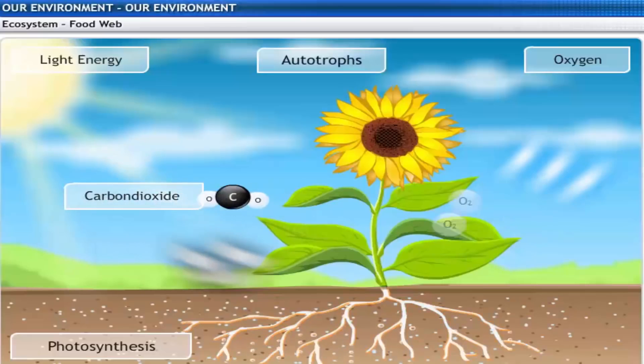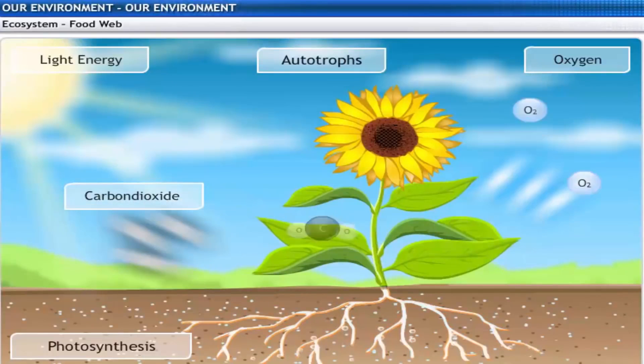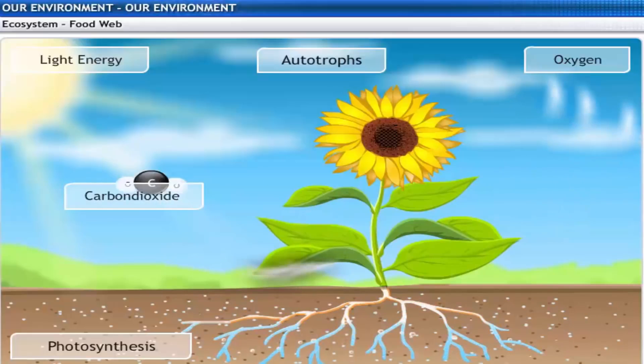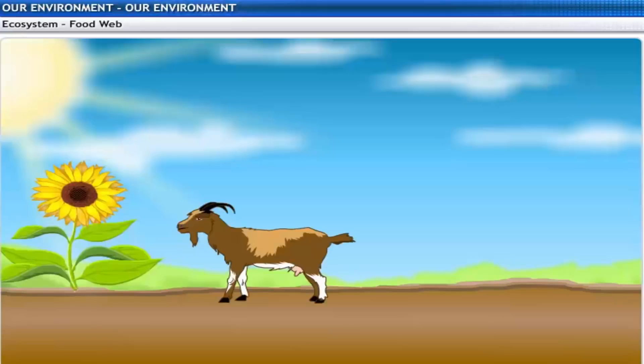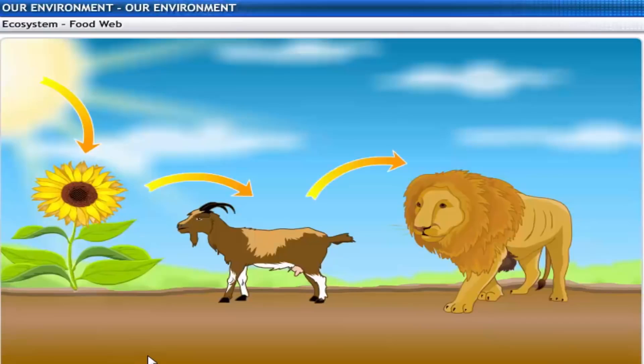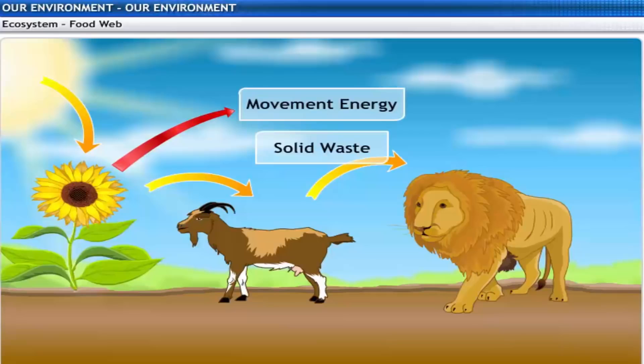Autotrophs capture the energy present in sunlight and convert it into chemical energy. This energy supports all the activities of the living world. From the autotrophs, the energy through the food chain goes to the heterotrophs. So when one form of energy is changed to another, some energy is lost to the environment in forms such as solid waste, movement energy, and heat energy which cannot be used again.